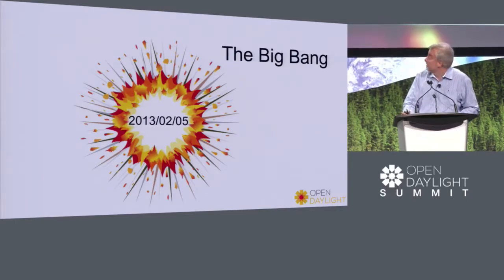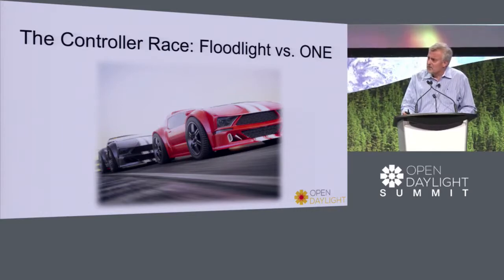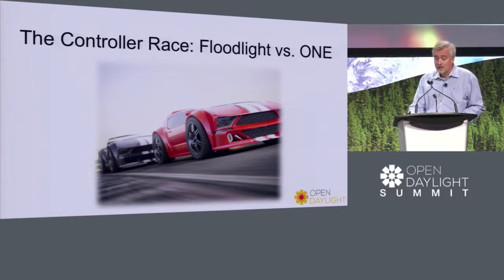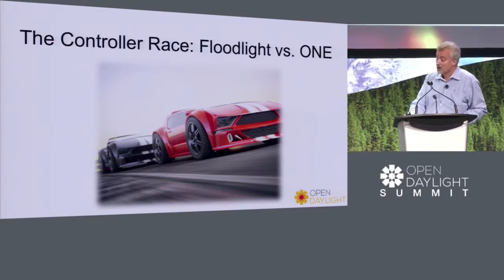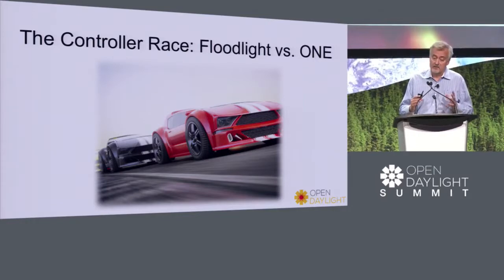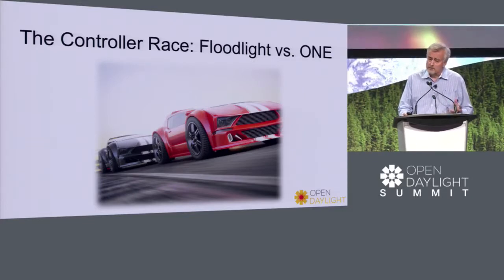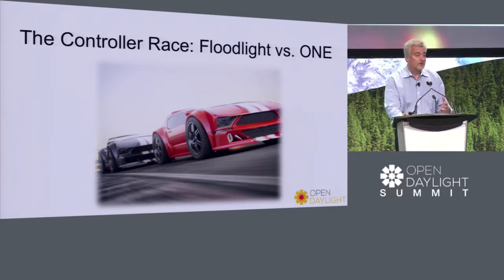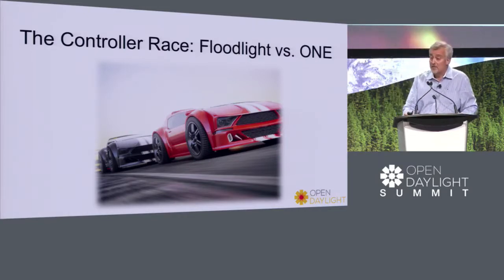It was very interesting times. As some of you may know, there were two code bases contributed initially to OpenDaylight. There was Floodlight and then there was what was at that point called the Cisco One Controller. It was a tight race between the two code bases — which one was going to be chosen as the code base for OpenDaylight, or maybe we could figure out how to create a new code base out of the two. Engineers from both teams were running at high gear, doing demonstrations, preparing presentations, and presenting their case to the newly formed OpenDaylight community.